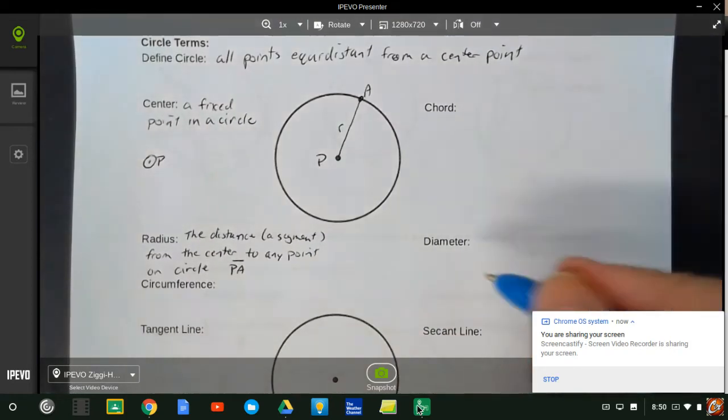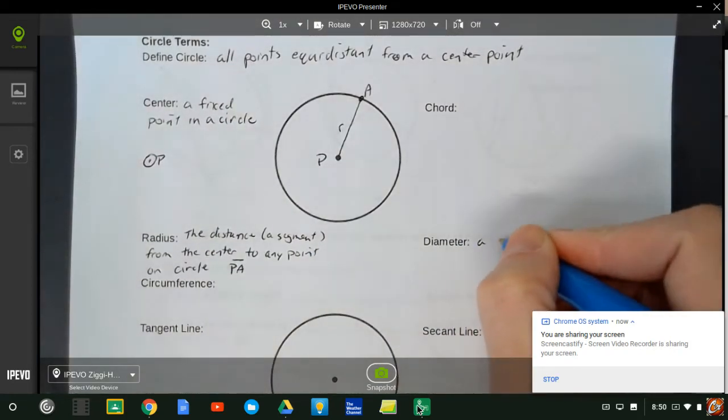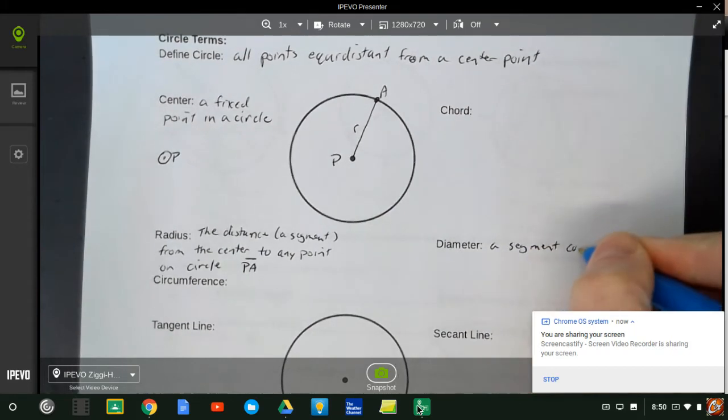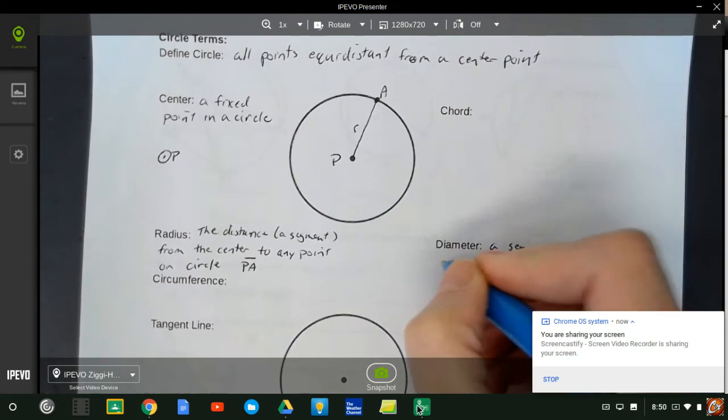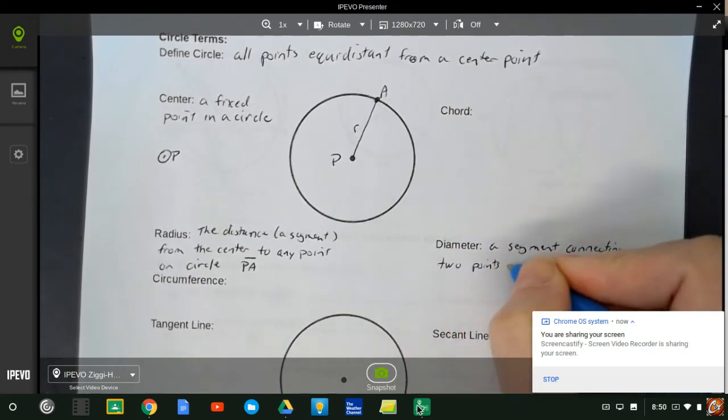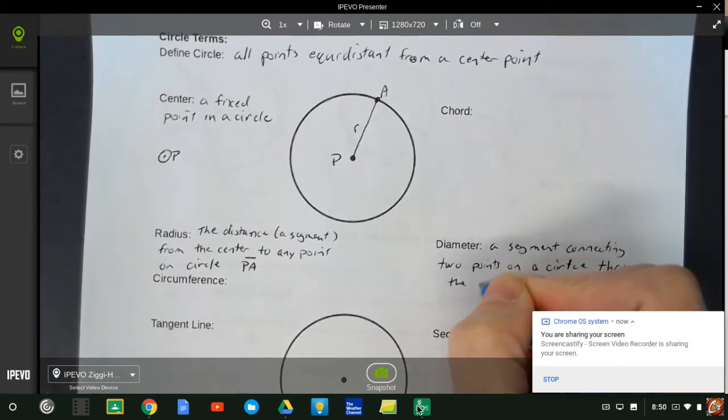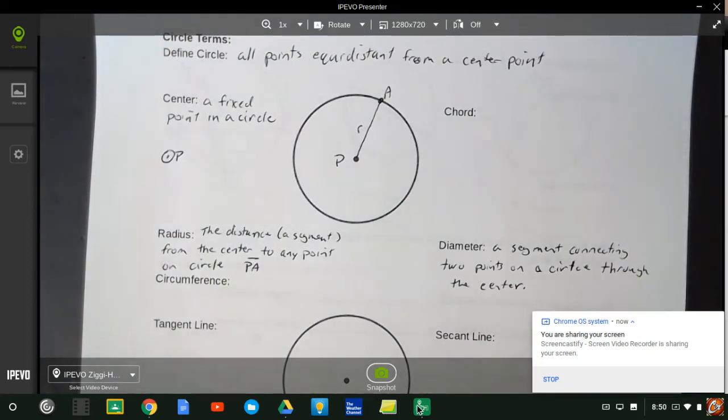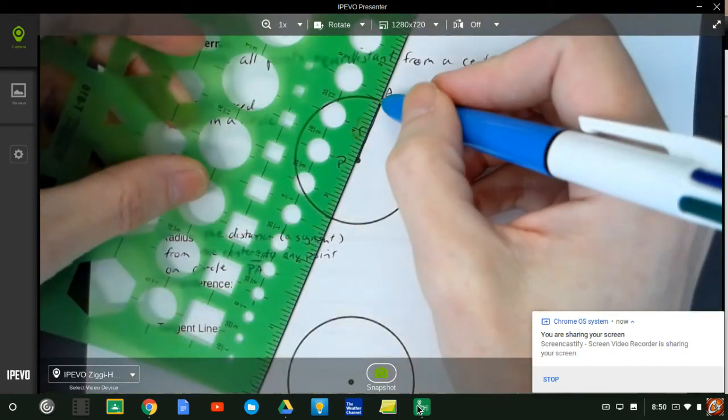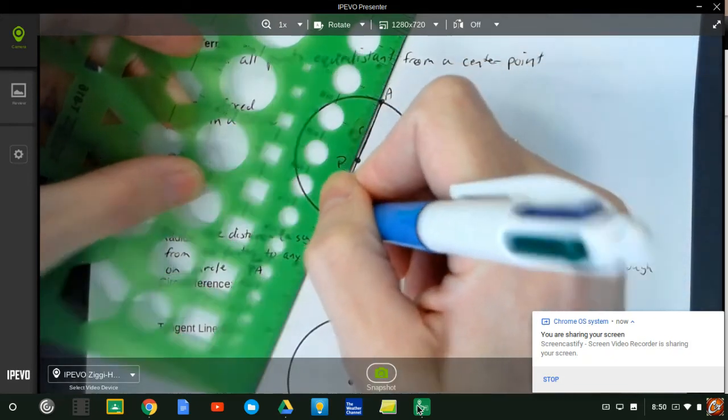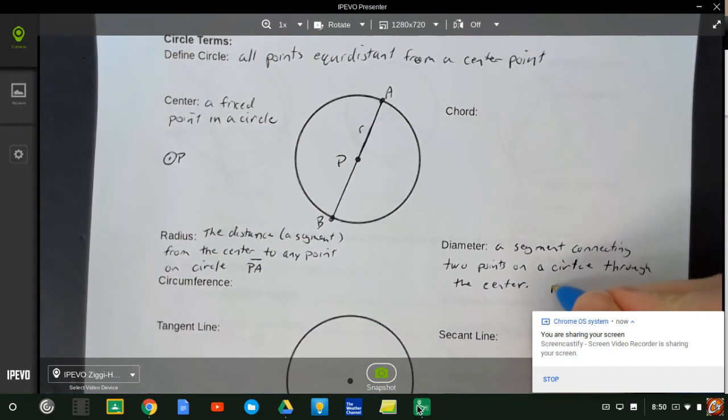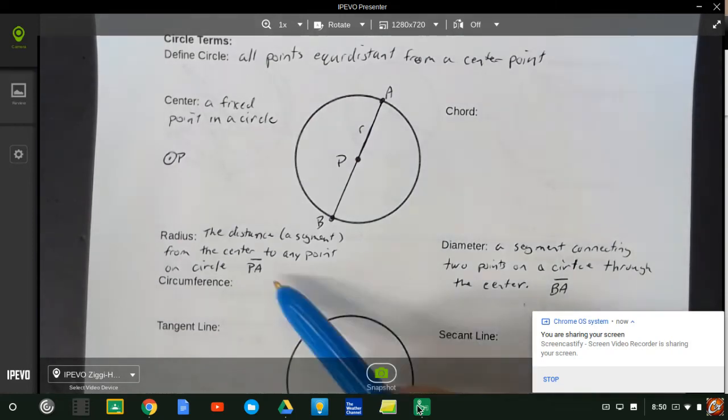Now, we also know what a diameter is, and I'm going to come back to chord. But a diameter is a segment connecting two points on a circle through the center. So it's important that the diameter goes through the center. You can't just connect any old two points. So if I connect this radius and go through the center to the other side, to point B, now BA is a diameter, because it goes through the circle. And we know measurement-wise, diameter equals two radii, one radius equals half a diameter, that kind of thing.